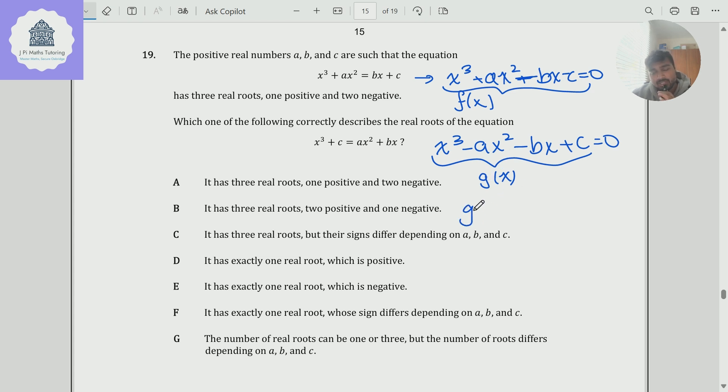And after staring at this for a bit, you might be able to notice that g of x is simply the negative of f of minus x. So if I take f of x and replace all the x's with negative x, the odd terms will become the negatives of what they are, but the even terms will stay the same. So that when I multiply by minus one out the front, everything then, the odd terms will go back to normal.